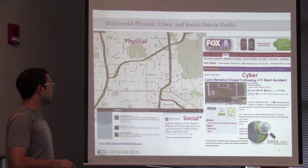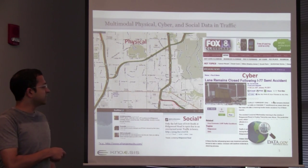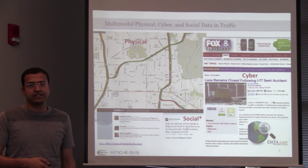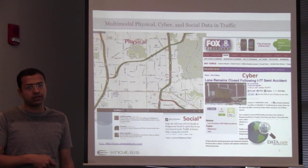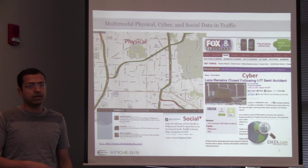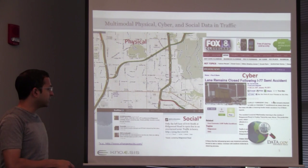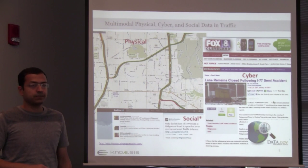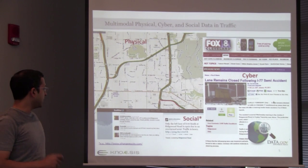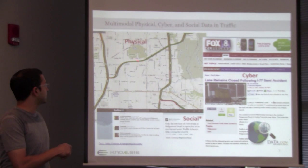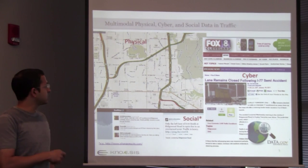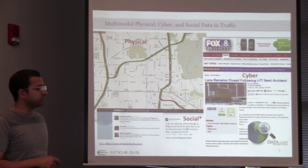There might also be information about cities — for example, what are the policy restrictions on different links, such as speed restrictions. OpenData.gov can provide that information. As you can notice, events in the real world manifest in physical, cyber, and social systems. This is what I mean by PCS.